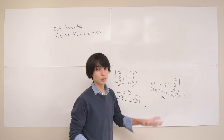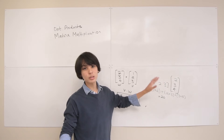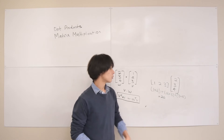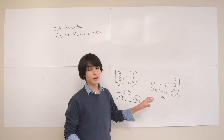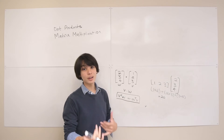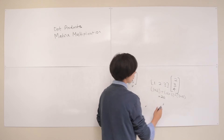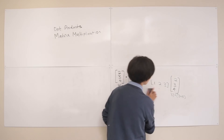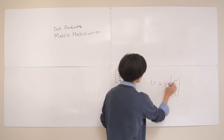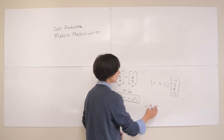Notice the first thing: the dot product between two vectors results in a scalar, and it always will. Whenever you see v-transpose w, think of that as evaluating to a single number. The second thing to notice is why these vectors have to be the same length — if one had more elements than the other, you'd run out of components to pair up, so you'd have an element left over with nothing to multiply by.